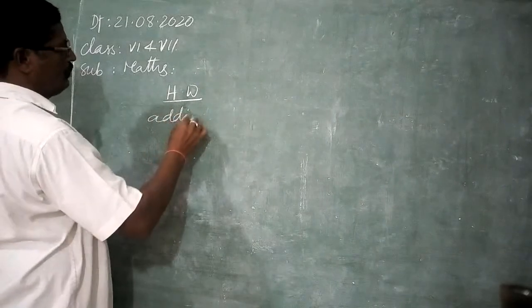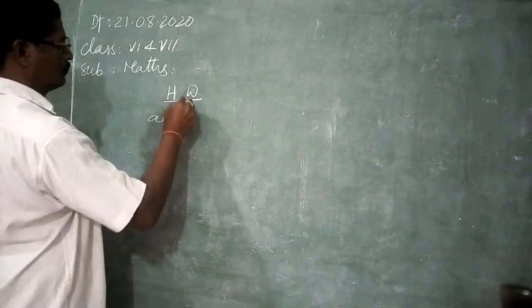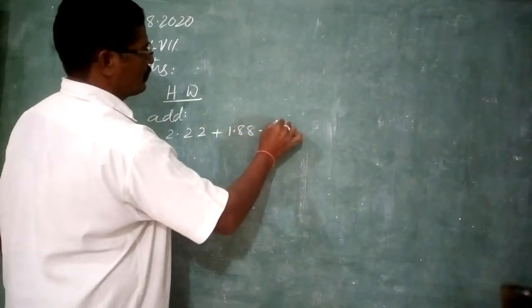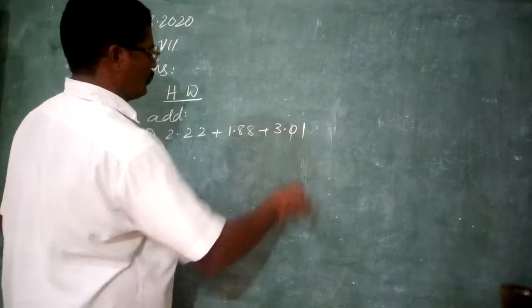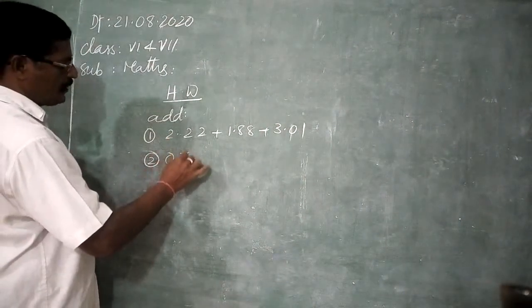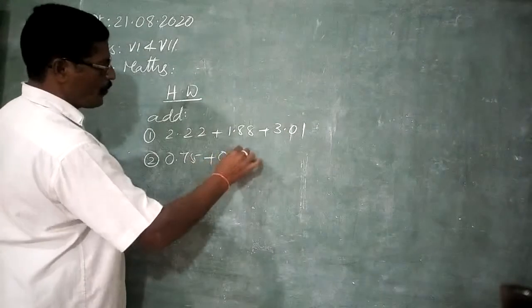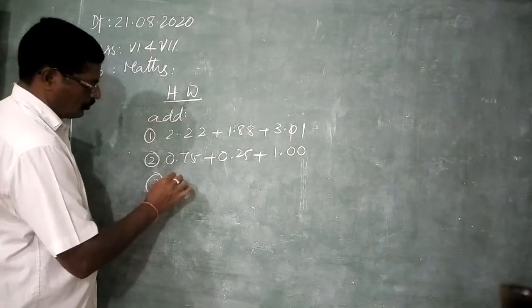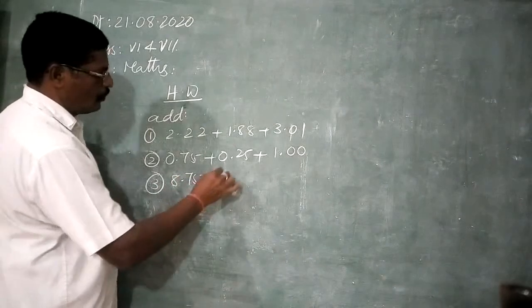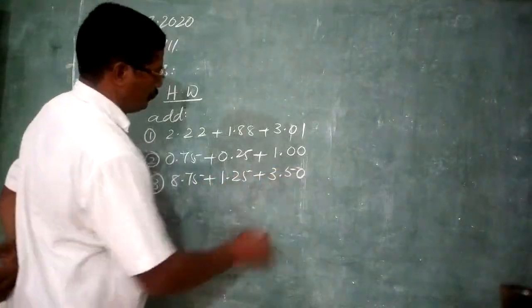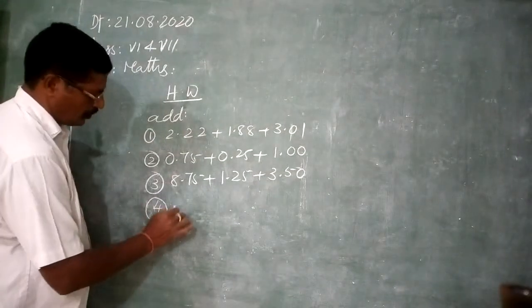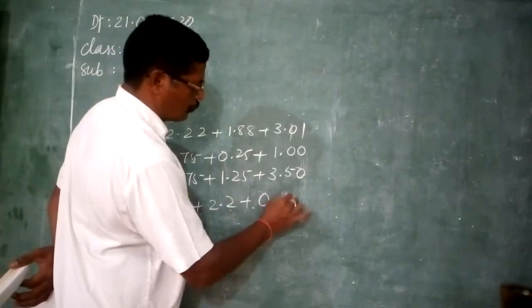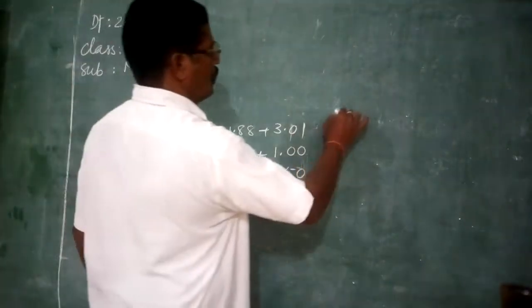Forward. The additions. Let's add. Add. First question 2.22 plus 1.88 plus 3.01. Second one 0.75, 0.25 plus 1.00. Third question 8.75, 1.25, 3.50, 4.75. Fourth question 10 plus 2.2 plus 0.02.